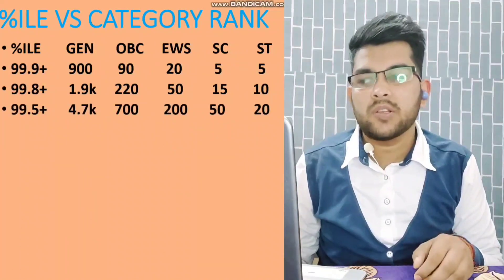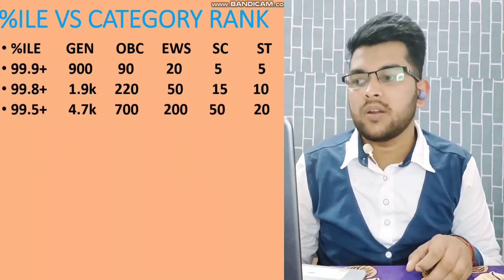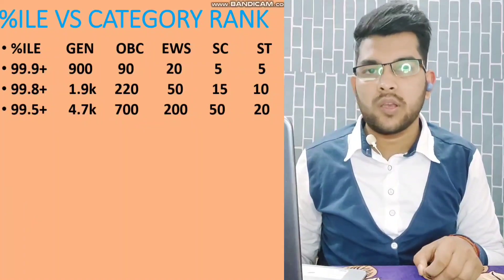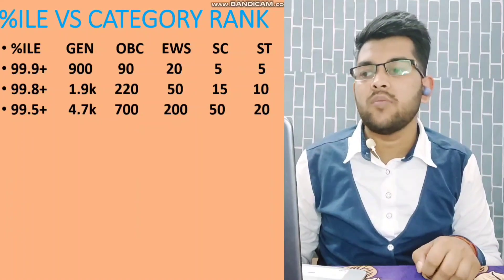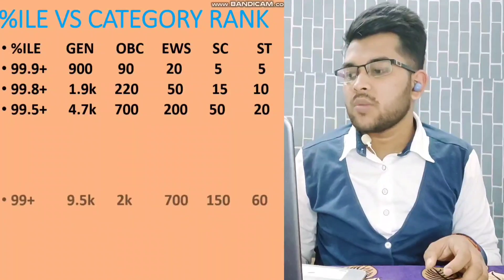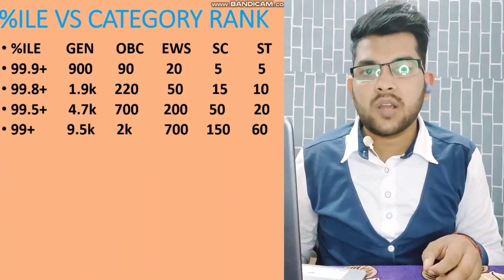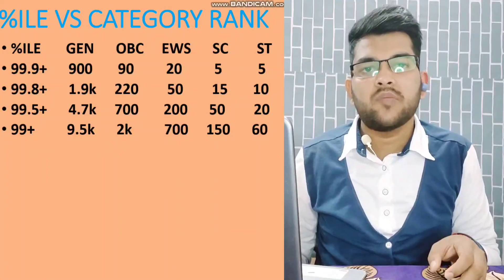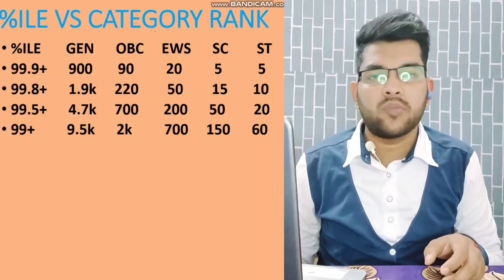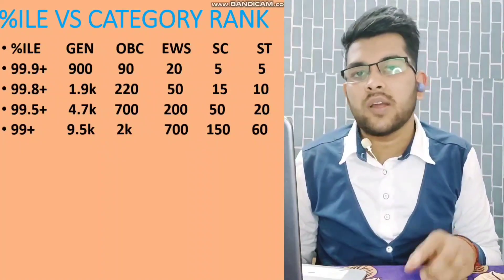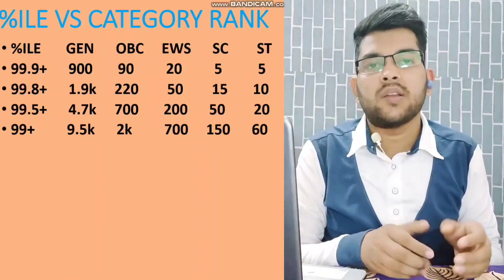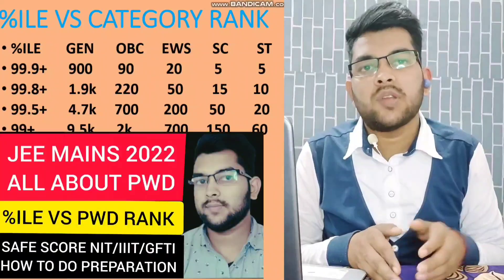For 99.5+ percentile: General rank under 4,700, OBC rank under 700, EWS under 200, SC under 50, and ST under 20 — 100% sure. For 99+ percentile: General rank under 9,500, OBC under 2,000, EWS under 700, SC under 150, and ST under 60 — 100% sure. If you are a PWD candidate, please watch my previous video for all PWD-specific information.